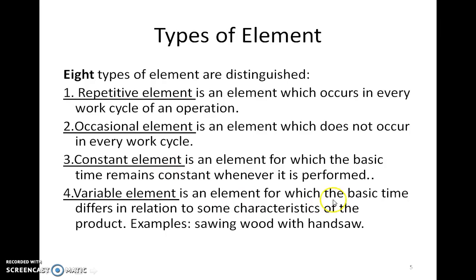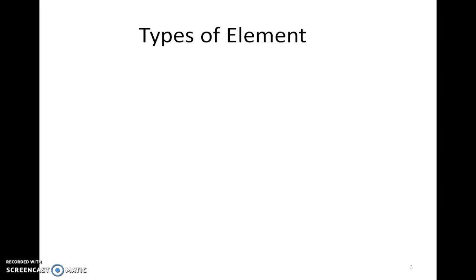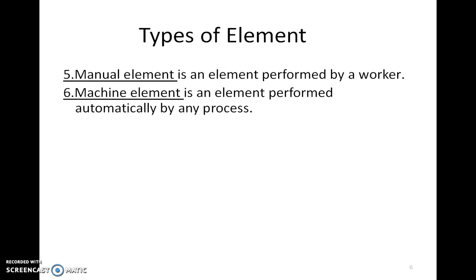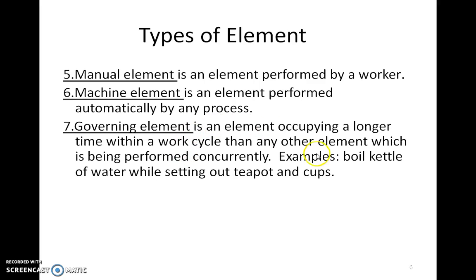A variable element is an element for which the basic time varies in relation to some characteristic of the product — for example, sawing wood with a hand saw, where the characteristic of the wood changes the timing. A manual element is an element performed by the worker, whereas a machine element is performed automatically by any process. A governing element is an element occupying a longer time within a work cycle than any element which is being performed concurrently.